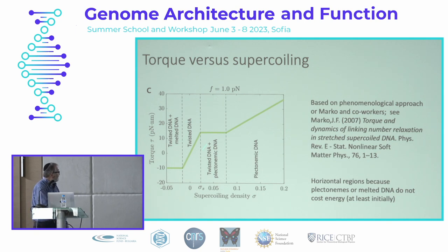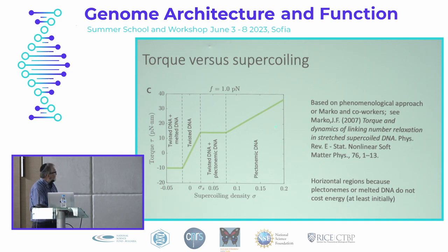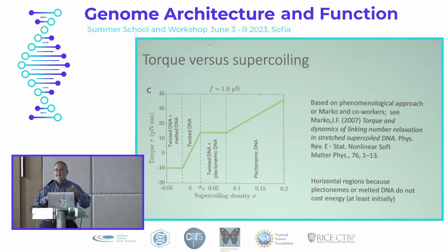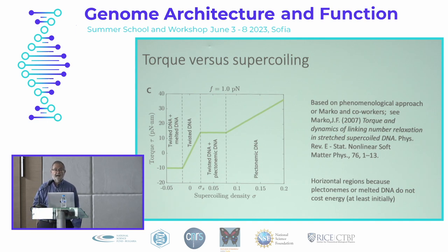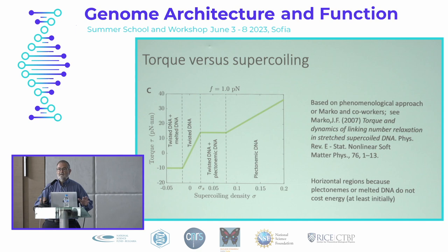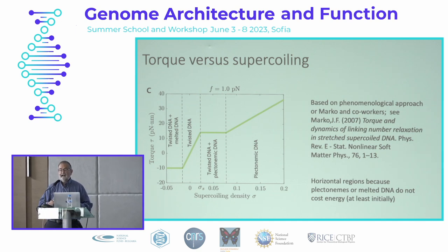There's a linear regime — what you'd get for any normal material — where if you twist it, it provides a linear torque to twist itself back. Then you get a region characteristic of plectonemes, where the DNA is not really changing its torque over some range because it's folding into a plectoneme structure. On the other side, you can get melted DNA, sometimes accompanied by R-loops. We can generally understand how, as you impose additional linking on the DNA, it responds with a torque given by this function.